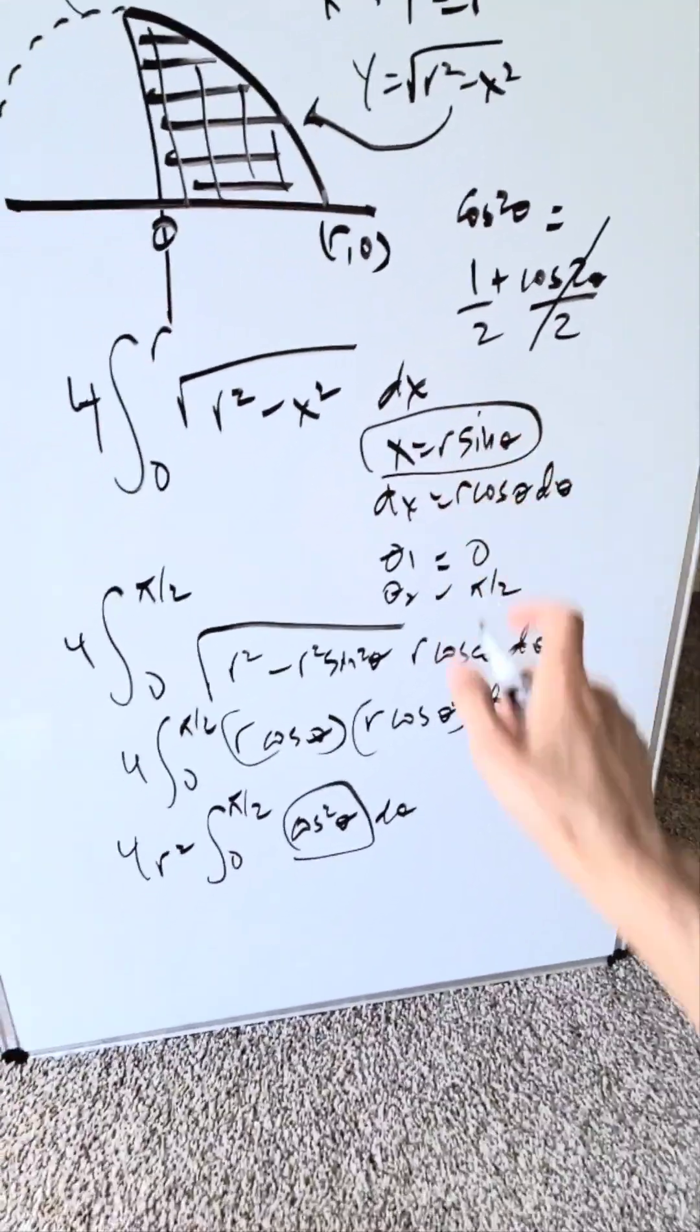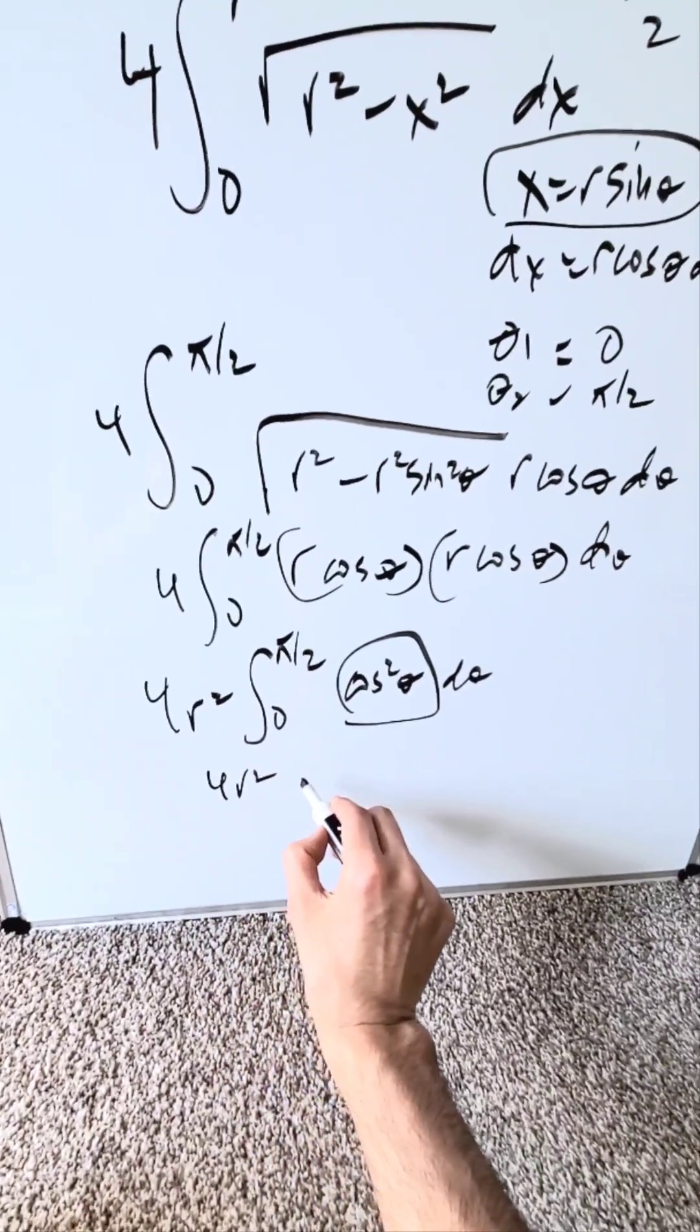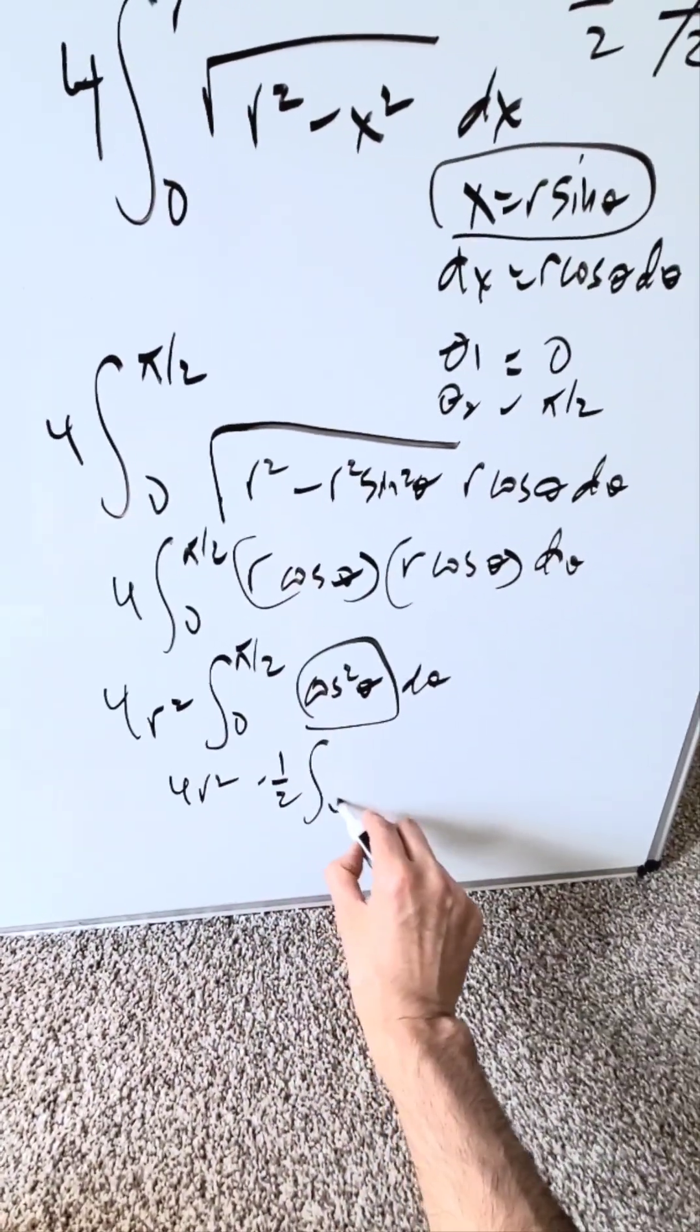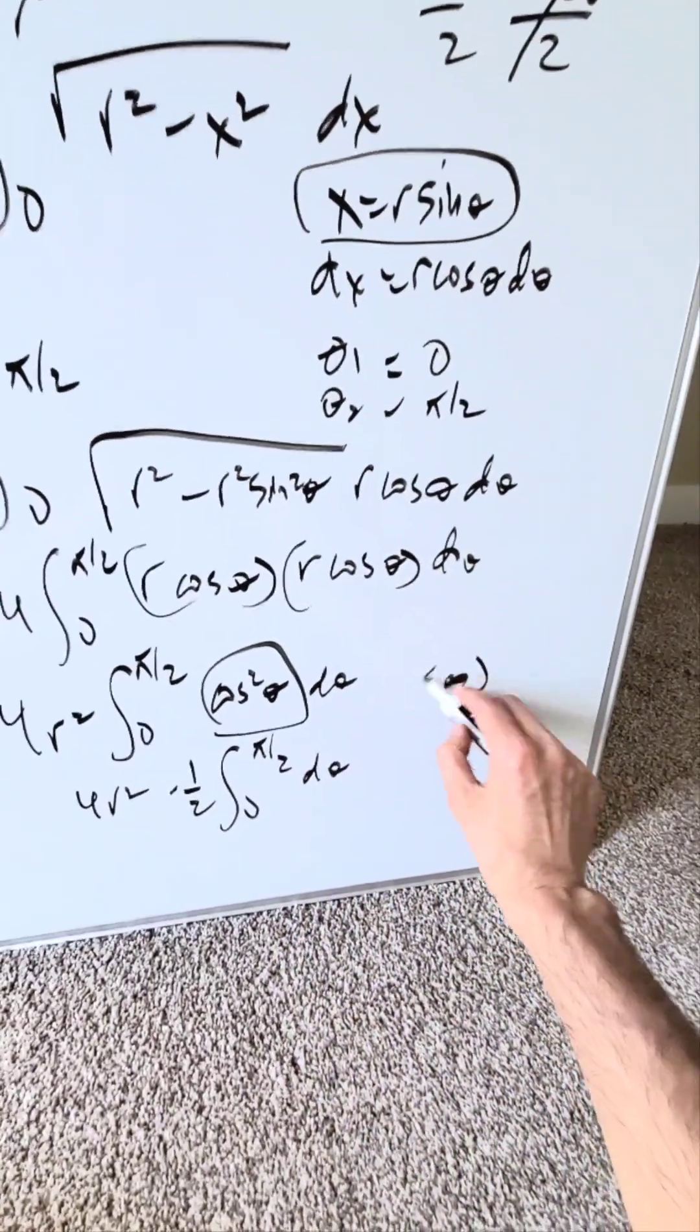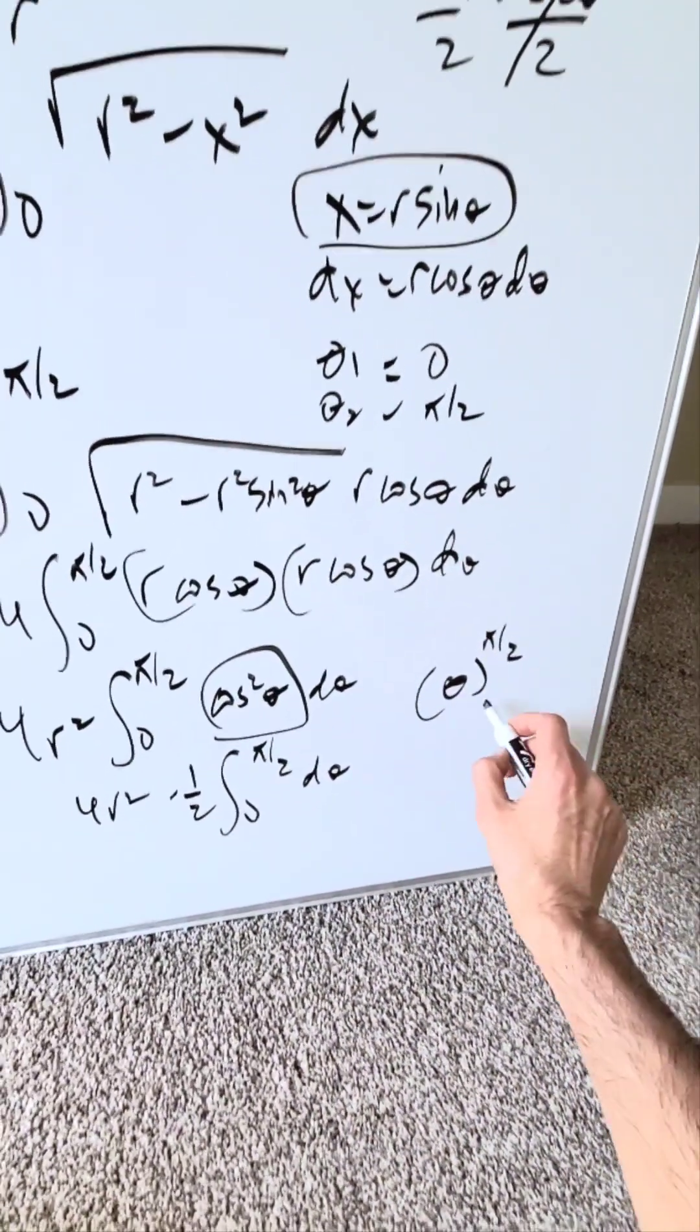You're only going to focus here on the 1 over 2. You now have 4 r squared times 1 over 2. You have 0 to pi over 2 d theta. Run this through. You have a theta, upper limit pi over 2, and a 0.